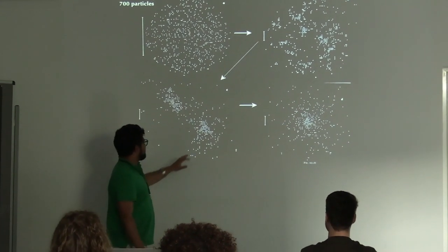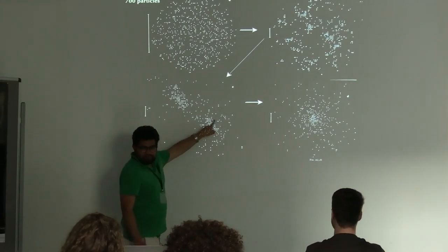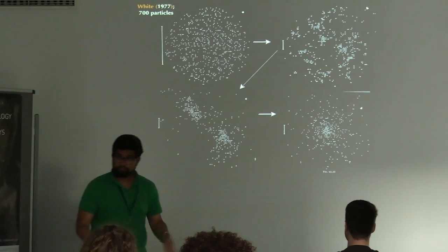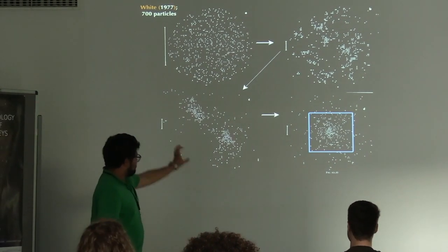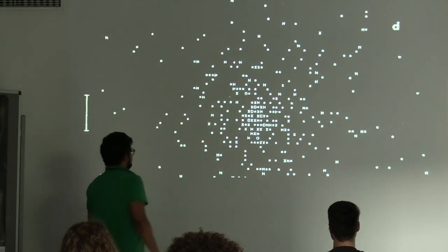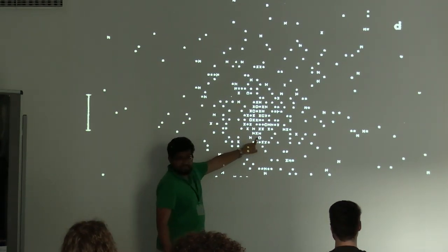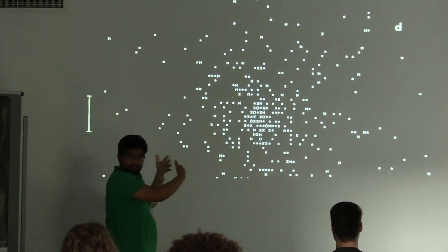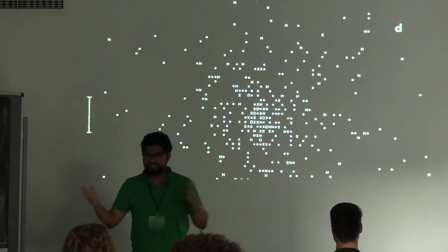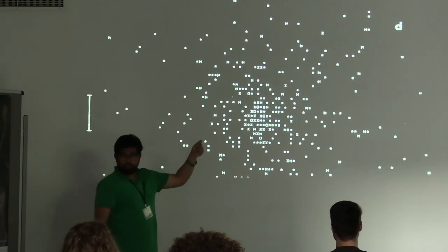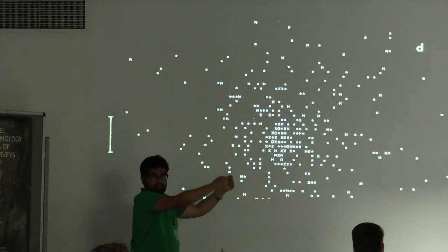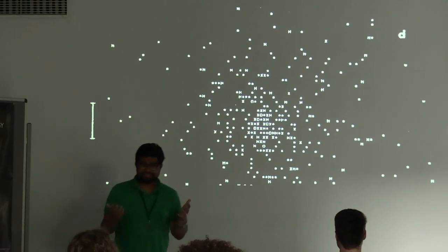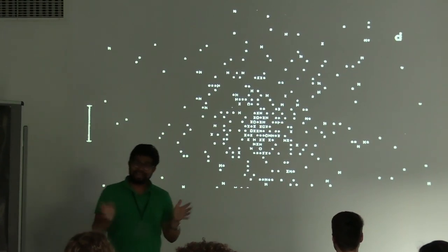One interesting historical detail: if you look closely, the points in that simulation look odd — they're not dots but characters like H, O, X, and so on. Because there were no plotting programs like matplotlib or IDL at the time, you had to know where each point should go, move the sheet of lined paper to that position, and use a typewriter to mark it. A really arduous exercise — you should be very glad we don't have to do that anymore.